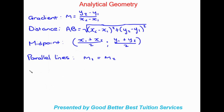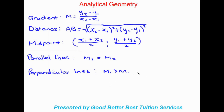The last equation we'll be looking at is perpendicular lines. If they ask us to find whether two lines are perpendicular, we need a gradient for both — m1 and m2. The only difference now is that if we multiply these two gradients together it should give us an answer of negative one. So perpendicular lines: times the two gradients together and if the answer is negative one, the lines are perpendicular.